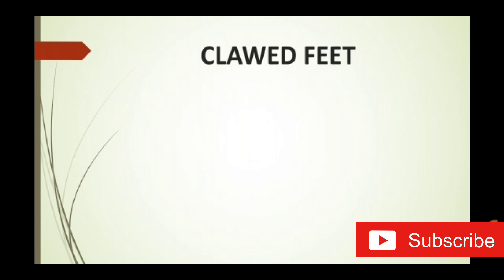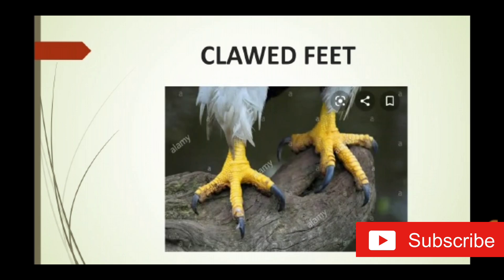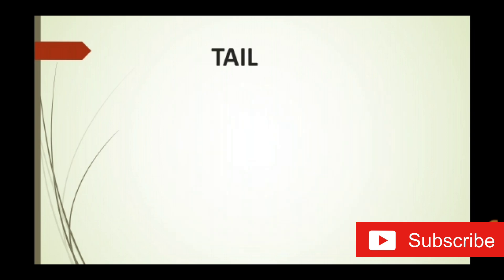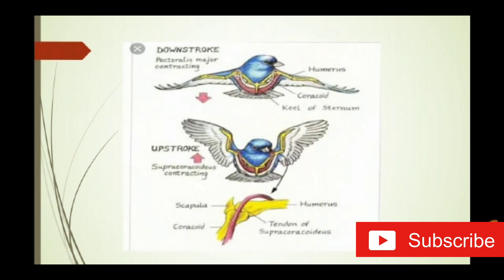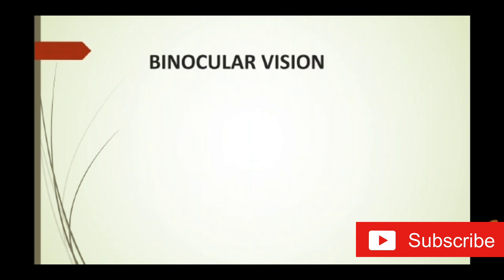Fourth, clawed feet — birds have a pair of clawed feet which help them to hop, move, run, and perch on the branch of a tree. The clawed feet give grip to sit on the branch of the tree. Fifth, tail — birds have a tail which helps them to control the direction of movement. Birds also contain strong chest muscles which help to withstand the atmospheric pressure during flight.